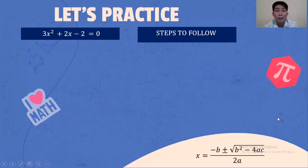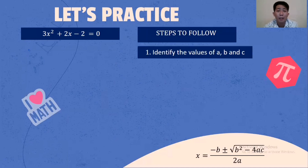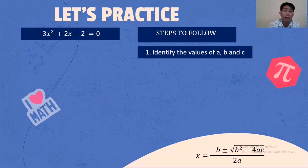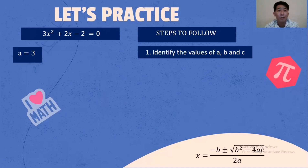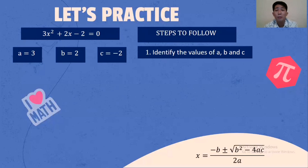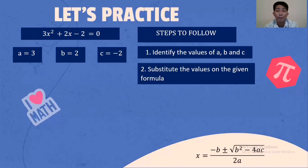Another example: 3X squared plus 2X minus 2 equals 0. Identify the values of A, B, and C. Value of A is 3, value of B is 2, and value of C is negative 2.